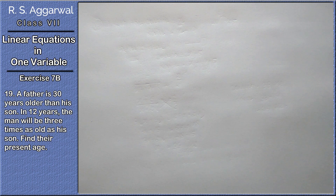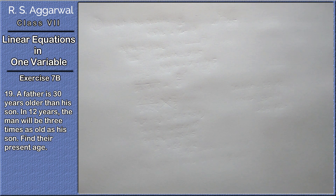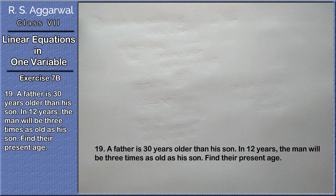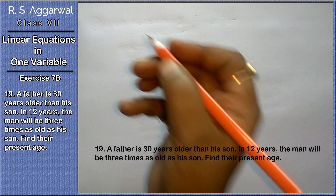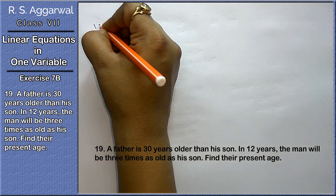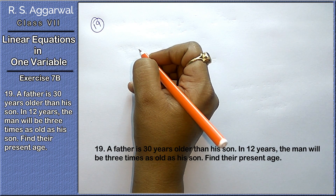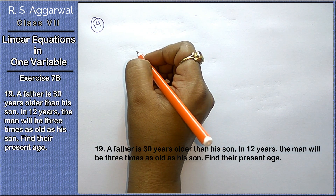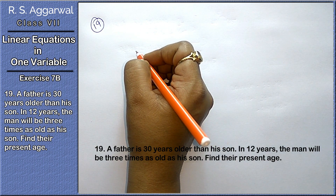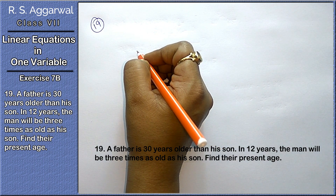Hello friends, welcome to Learn Math. Today we will do question number 19th and 20th of chapter number 7, that is Linear Equation in One Variable. Question number 19th is: a father is 30 years older than his son.